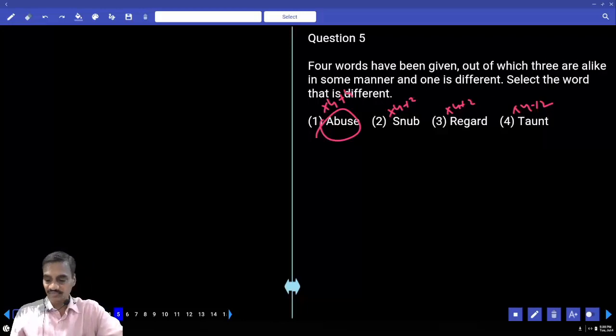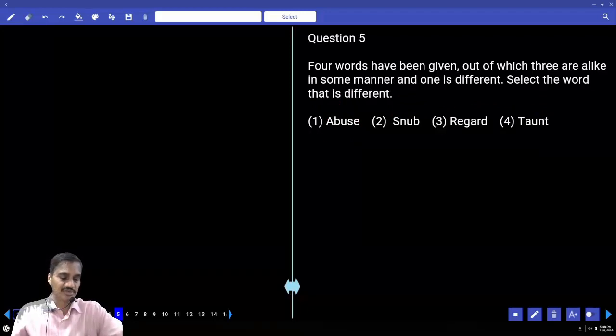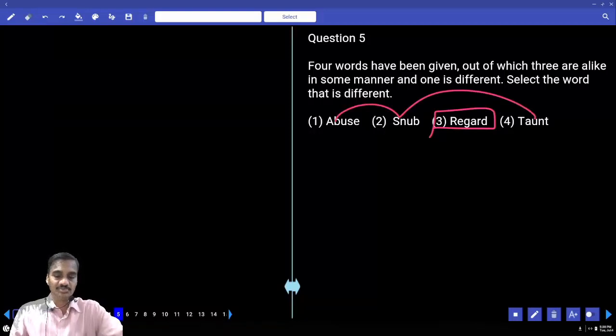Question number five: abuse, snub, regard, and taunt. Except regard, the remaining three are all synonyms, and regard is opposite to those three.